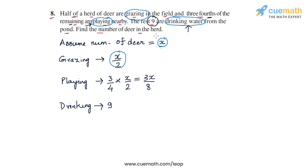We have the total strength of the herd, which has been split into three parts: some deer who are grazing (x by 2), some deer who are playing (3x by 8), and some deer who are drinking (9).